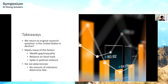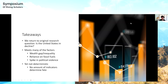Returning to our original research question — is the United States in decline? — it has certainly met many of the factors we saw: wealth gap, inequality, environmental reliance on fossil fuels, and a spike in political violence. Yet I want to clarify that these factors are cause for worry, but not a cause for giving up. Only by having a reasonable amount of worry while still maintaining hope for a better future can we truly address the problems that we face. And that is it for my presentation — thank you very much for listening.